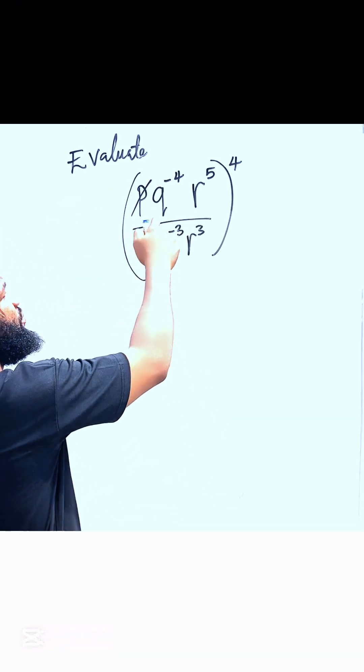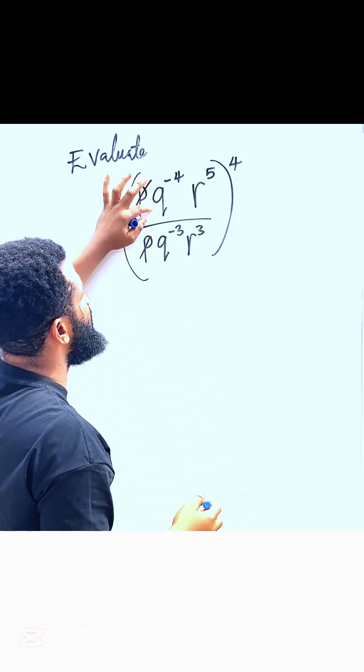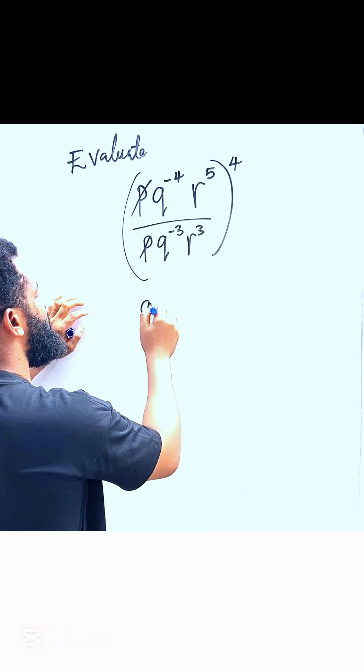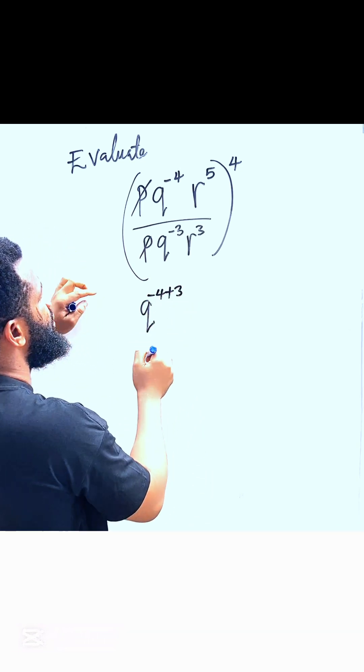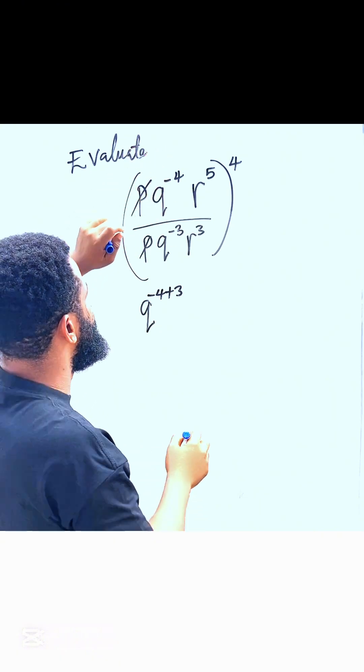But when it comes to q, they are going to do a different thing because q is raised to minus 4 and q is raised to minus 3. They will subtract their power, so this is going to be q raised to minus 4 plus 3. Minus on the denominator we go up and become plus, then this is times r raised to 5 minus 3, all raised to 4.